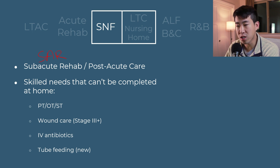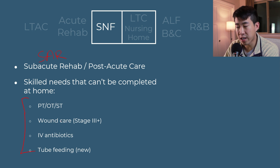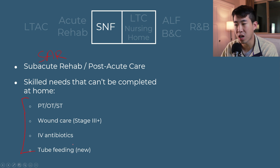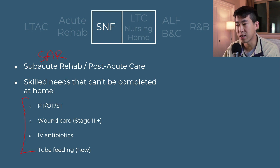The four most common reasons a patient will need skilled therapy — very high yield — are: physical therapy, occupational therapy, speech therapy; wound care, usually for stage 3 ulcers or above; IV antibiotics where they can't manage them at home; and new tube feeding. These are the four most common reasons that patients will need skilled needs to go to a SNF.